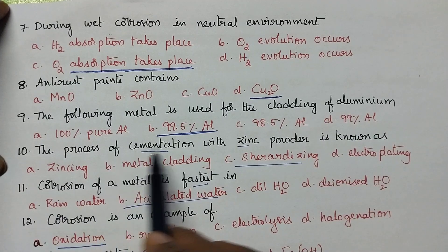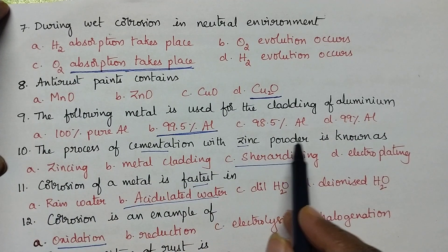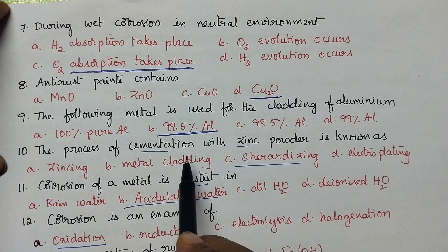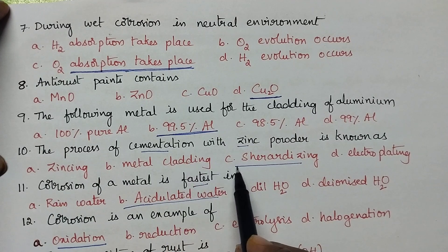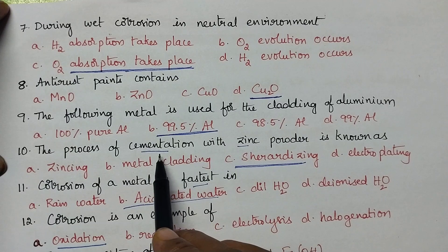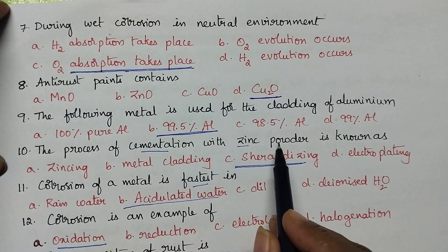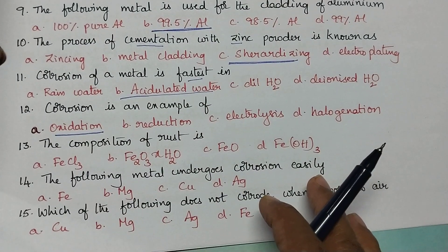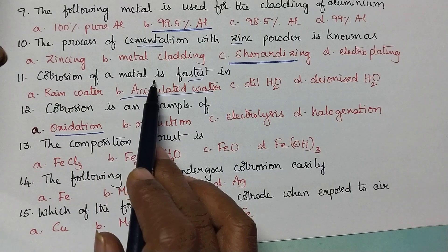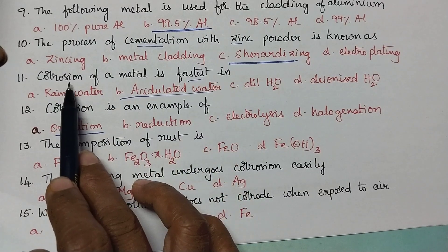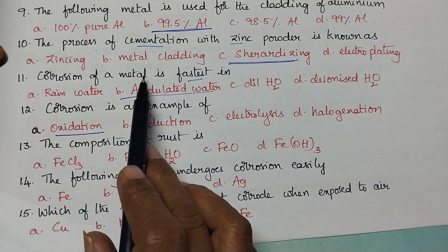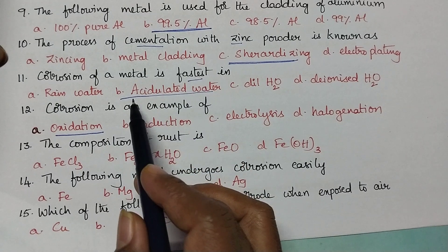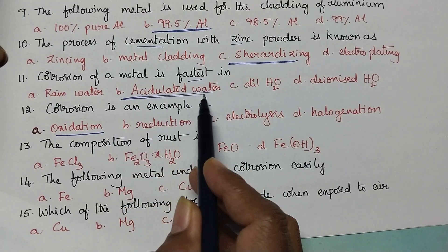The process of cementation with zinc powder is known as sherardizing. Generally, in order to protect very small objects from corrosion, the sherardizing process is preferred. Corrosion of metal is fastest in acidulated water, as corrosion is an oxidation process and is generally accelerated in the acidic environment.